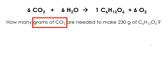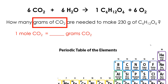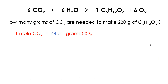It says grams of carbon dioxide, so I'm going to need the molar mass of carbon dioxide. I pull out my periodic table and find one carbon and two oxygens. I add up the masses and I get 44.01. So this is the first fact I need to solve the problem: the molar mass of carbon dioxide.